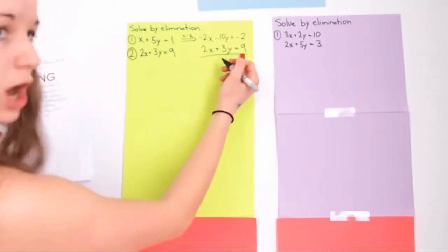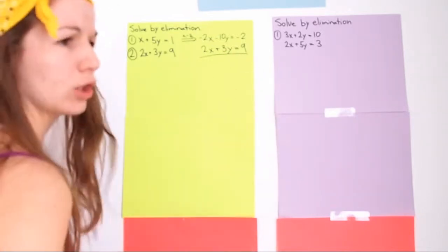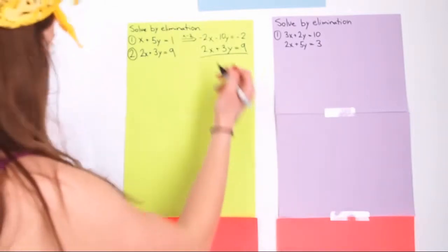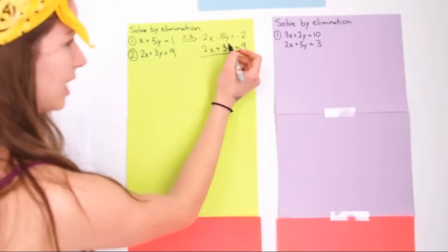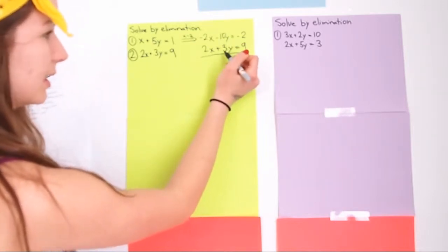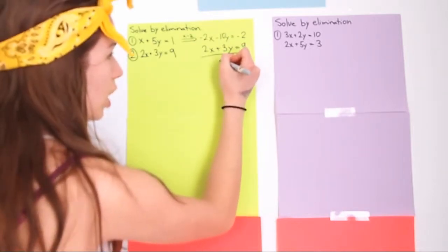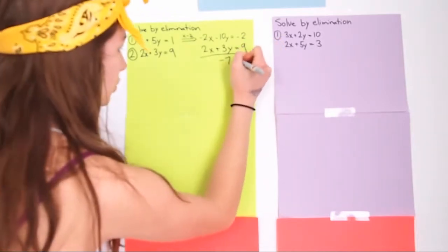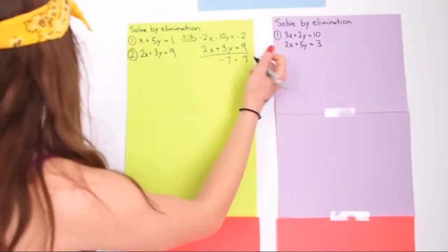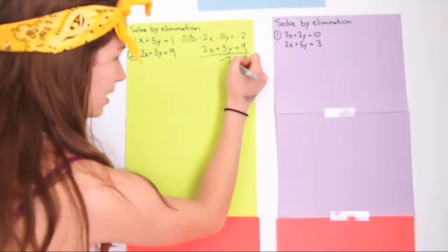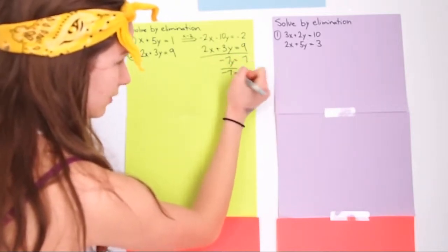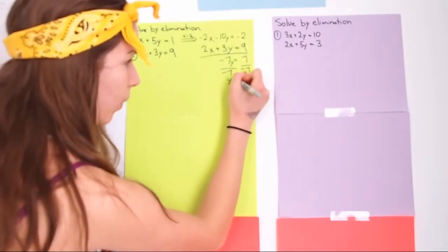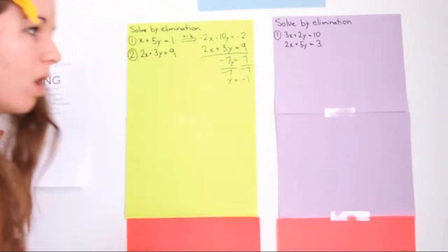So now you have to add up everything. In each column, get the sum. Negative 10y plus 3y equals negative 7y. Negative 2 plus negative 1 equals negative 7 on the right side. Divide both sides by negative 7. You get y equals negative 1.